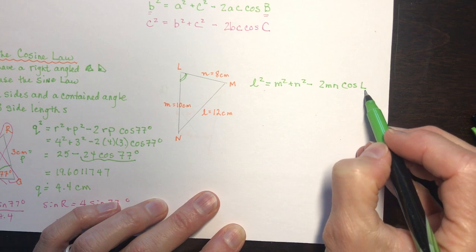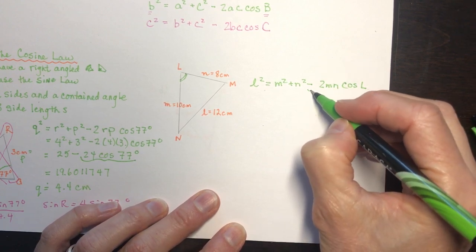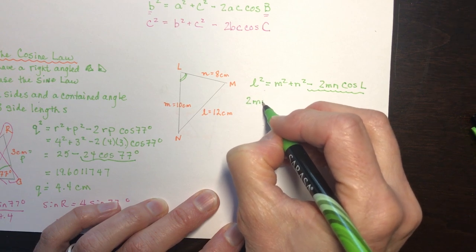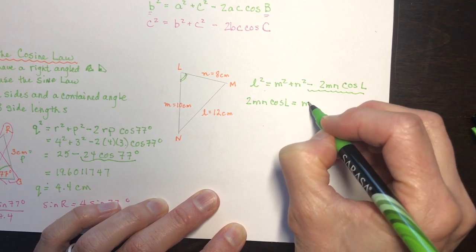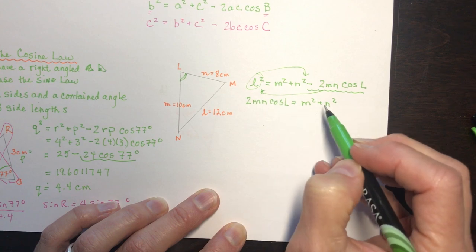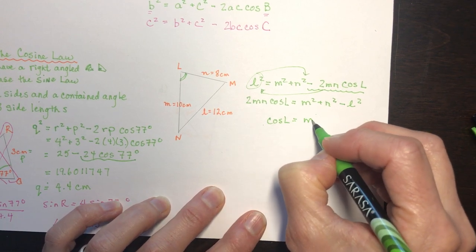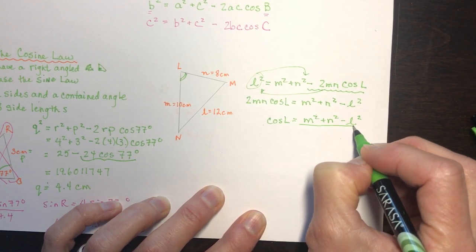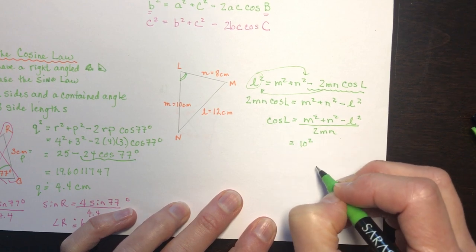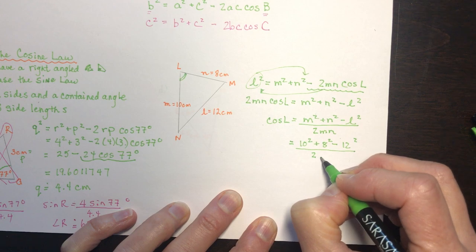Rearranging: move the 2MN cosine L term to the other side, then bring L squared over, giving 2MN cosine L equals M squared plus N squared minus L squared. Dividing by 2MN: cosine L equals (M squared plus N squared minus L squared) divided by 2MN. Plugging in M equals 10, N equals 8, L equals 12, divided by 2 times 10 times 8.